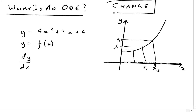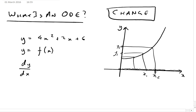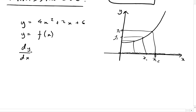Differentiation is just literally modelling change. We call it rate of change - how quickly something changes - but it's essentially just change. This is really at the heart of everything to do with differentiation. So basically if we differentiate y with respect to x, what I'm saying is how does y change as we vary x. And of course you know a formula for differentiating this.